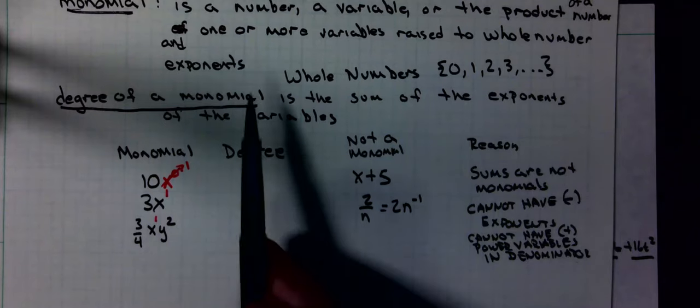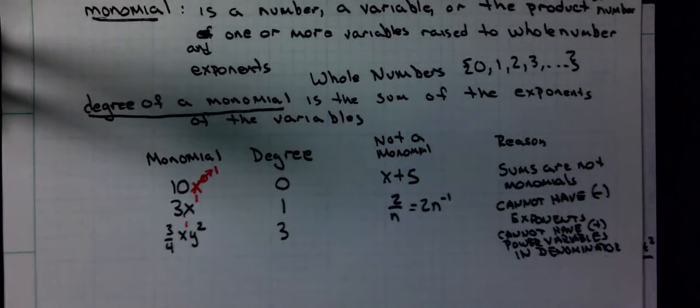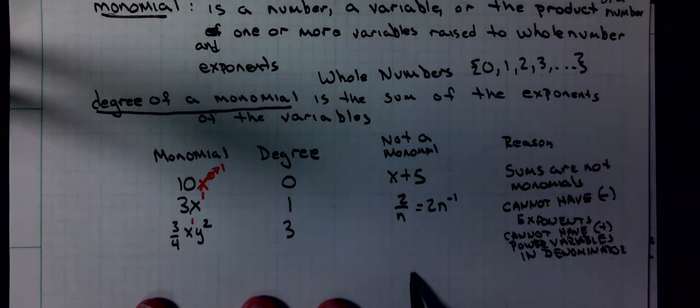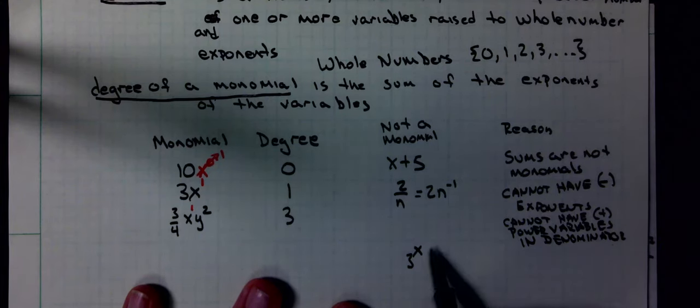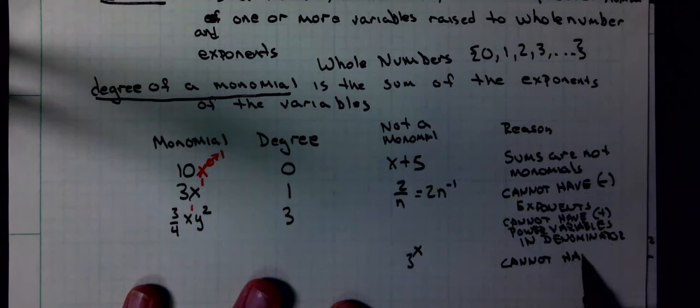Remember, my monomial, my exponents have to be whole numbers. 3 to the x. This is an exponential equation because the variable is in the exponent. We cannot have variable in the exponent.